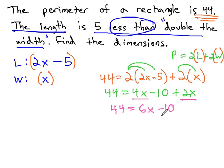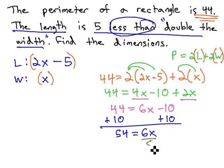We now have a two-step equation we can solve by adding 10 to both sides. 54 equals 6x. Finally, dividing both sides by 6 will tell us what x is. x is equal to 9.